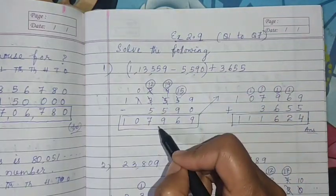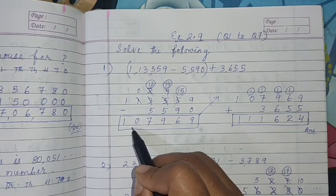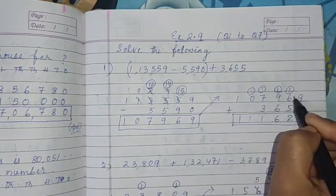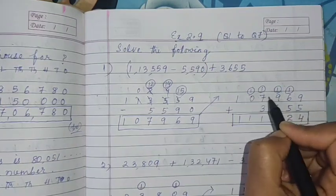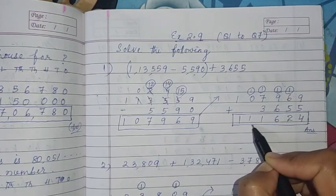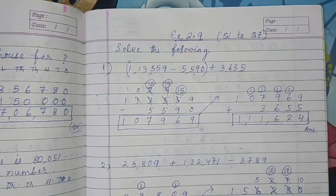Whatever answer you got, you got here 1,07,969, so you write here. Then plus the third number, what is left, add. Then we got 1,11,624. In this way we'll solve.